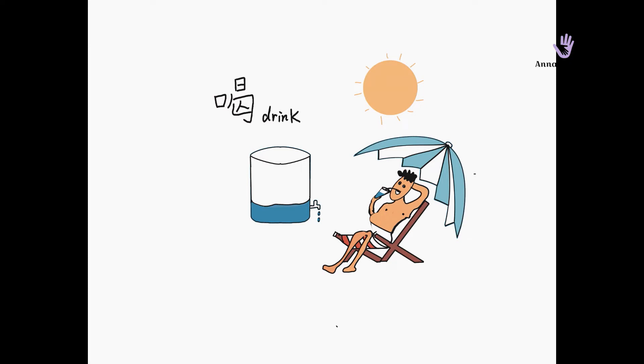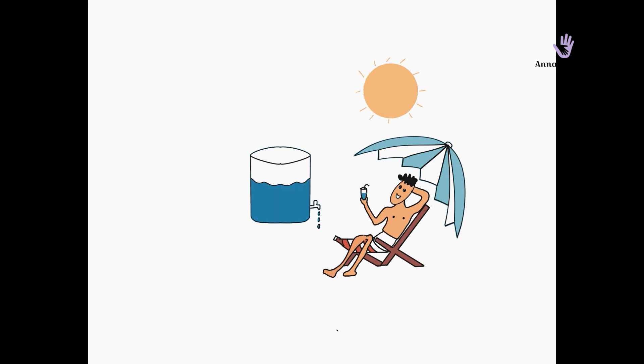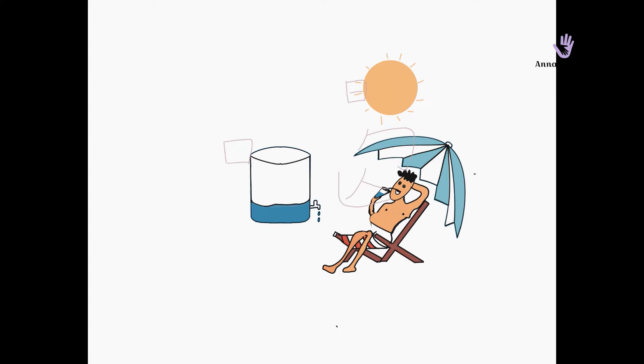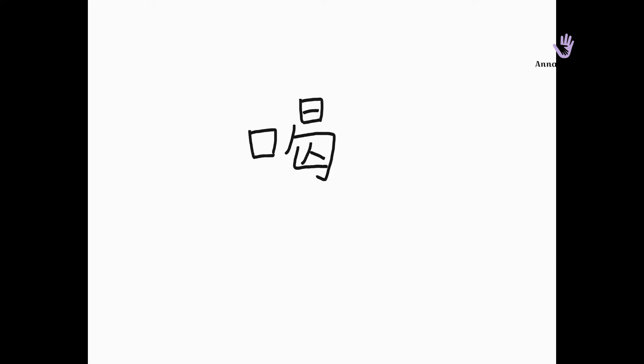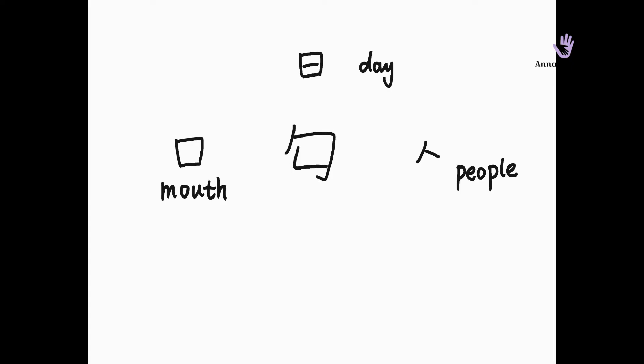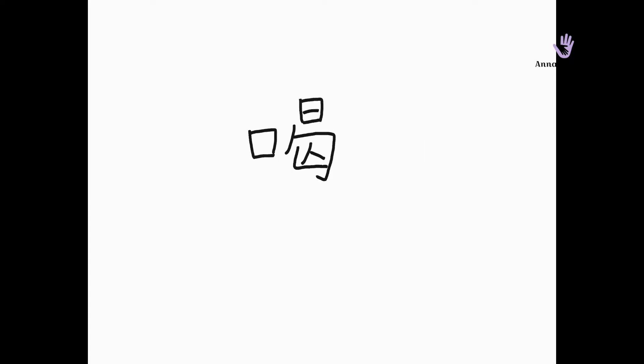Please repeat. We separate this word into four parts so that you can remember it easily. They are 口 (mouth), 日 (day), people 人. Just remember: one person is drinking under the sun. Remember the cartoon? You remember how to write this word.